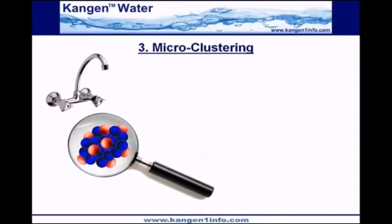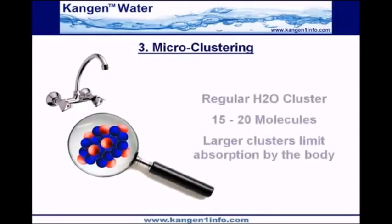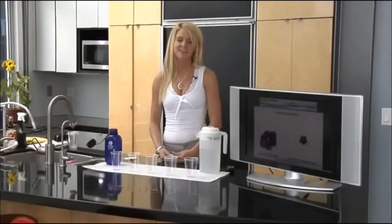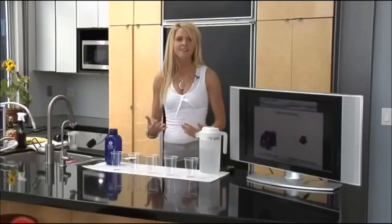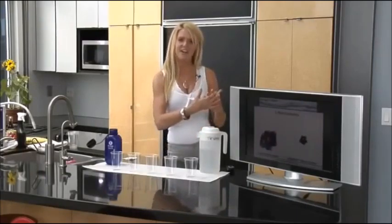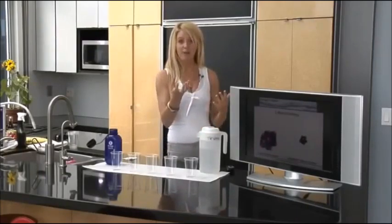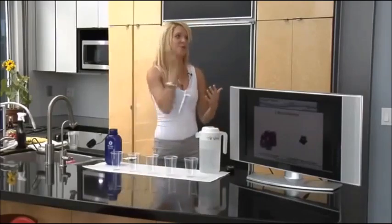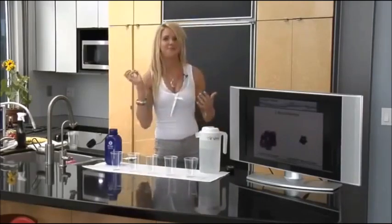The third property of kangen water is called micro-clustering. The easiest way for me to explain this is if you think about — let's say you're at a softball game and there's a chain link fence, and you have some softballs and you're going to try to throw those through the fence.